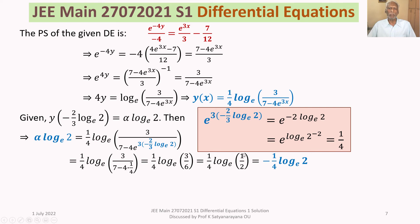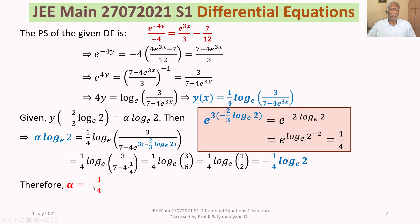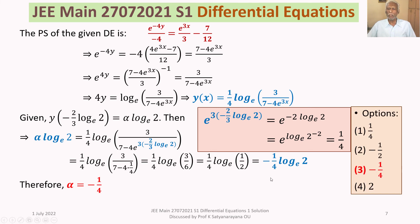We obtained −(1/4) · ln 2, and this is given to be α · ln 2. Comparing coefficients of ln 2, we get α = −1/4. Looking at our options, the answer −1/4 corresponds to Option 3. Our final answer is Option 3.